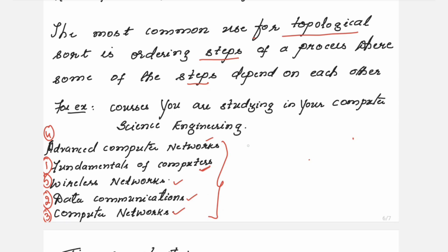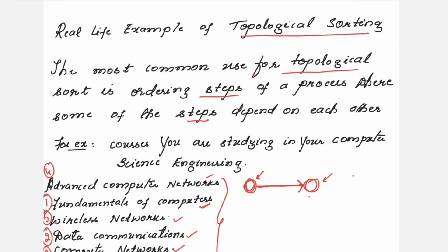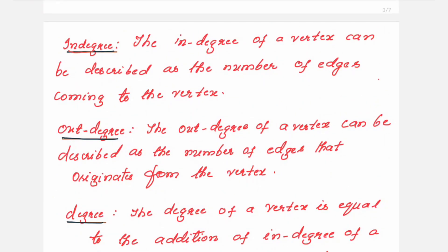These subjects represent the vertices in the graph and the edges represent the dependencies. For example, an edge from fundamentals of computers to data communications means you can study data communications only after studying fundamentals of computers. If there are no incoming edges towards a particular vertex, then there is no dependency for that course.